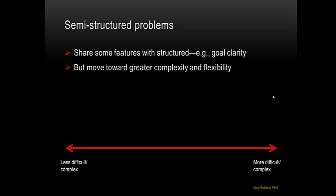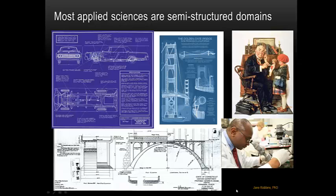Semi-structured problems have some features of structured problems — for example, the goal state is known — but they begin to move in the direction of what is called a semantically rich problem domain, moving toward more difficult or complex types of problems. Most applied sciences are semi-structured domains: engineering problems or medical diagnosis, for example. There is a clear goal, they rely on large bodies of prior knowledge and proven practice including standards for solution processes, and most or all information for solution is available or obtainable, even if with some difficulty. However, semi-structured problems rely on professional judgment and it may be possible to choose among or adapt known operators for solution. In this sense they are no longer structured, although the range of possible solutions may be limited or represent variations on a theme.